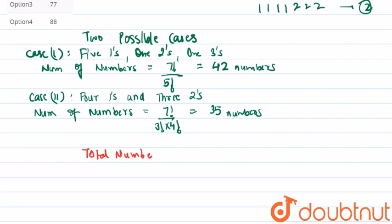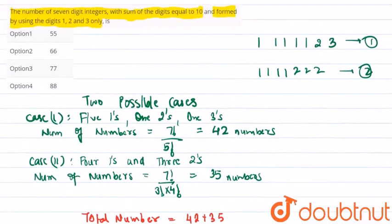That are formed by the given condition are 42 + 35 = 77 numbers. So from this we get that option 3 is our correct answer.